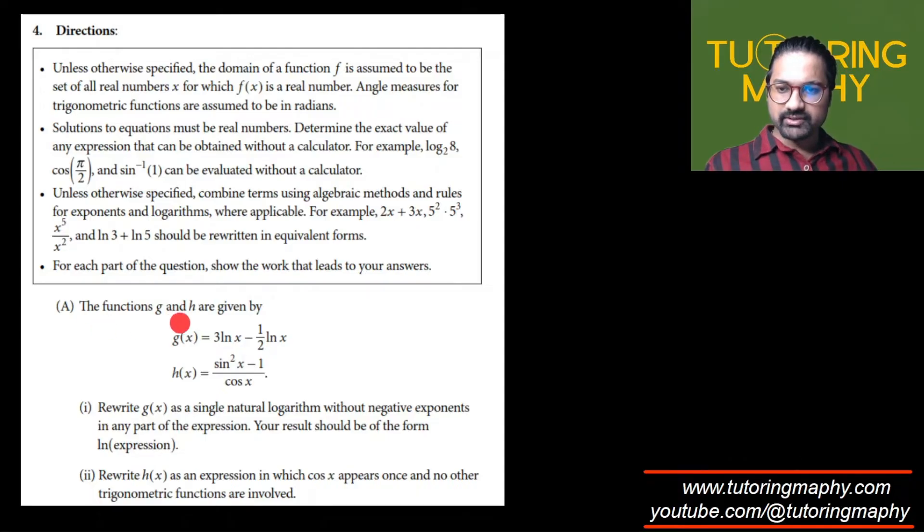The functions f and g are given by g is some function of log and h is some trigonometric function. We're going to rewrite g(x) as a single natural logarithm without negative exponents in any part of the expression. Your answer should be of the form ln some expression. This question is pretty much based on using the properties of logarithm and simplifying that up.